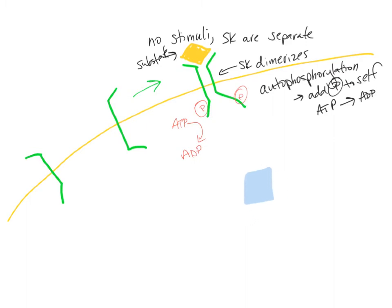Floating around as a blue square. So our response regulator is going to make its way up to the sensor kinase, and the transfer of that phosphate group is going to happen. So this phosphate group is going to get added to it.